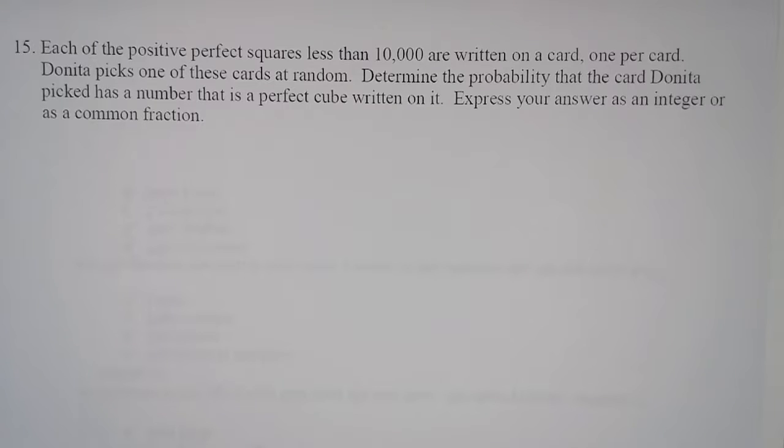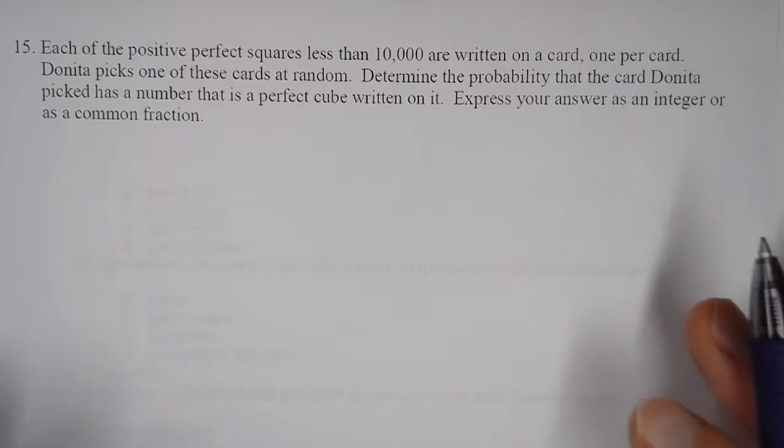In this problem it says each of the positive perfect squares less than 10,000 are written on a card, one per card. Donita picks one of these cards at random. Determine the probability that the card Donita picked has a number that is a perfect cube written on it. Express your answer as an integer or as a common fraction.